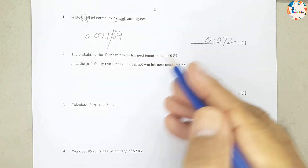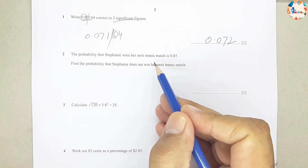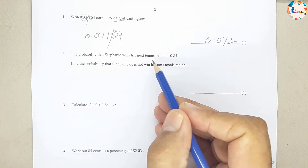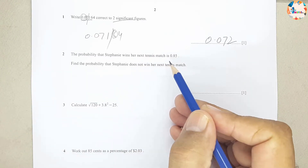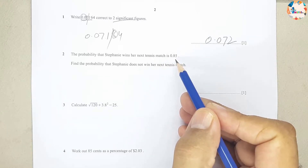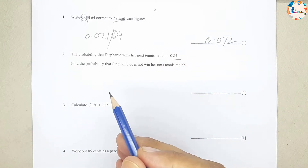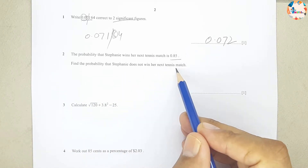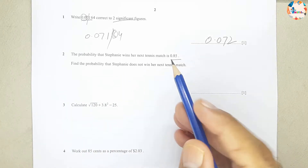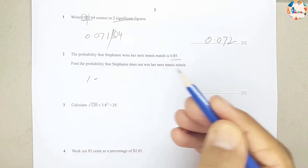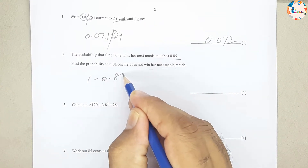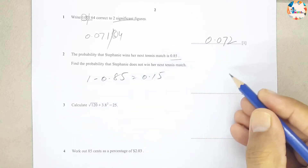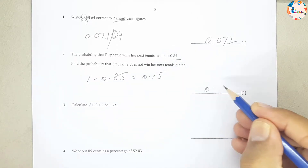Question number 2: the probability that Stephanie wins her next tennis match is 0.85. Find the probability that Stephanie does not win. Total probability is 1, so we write 1 minus 0.85, which equals 0.15.